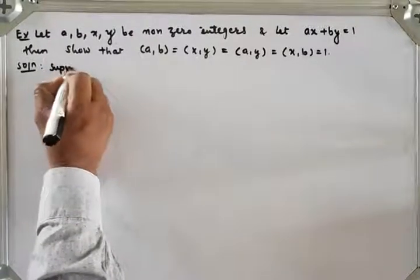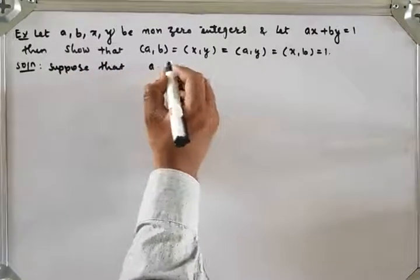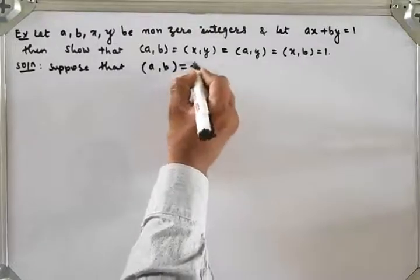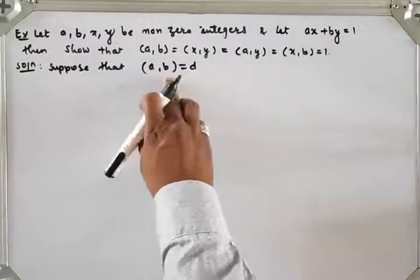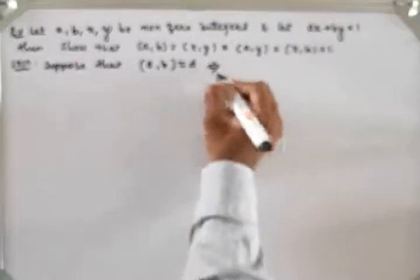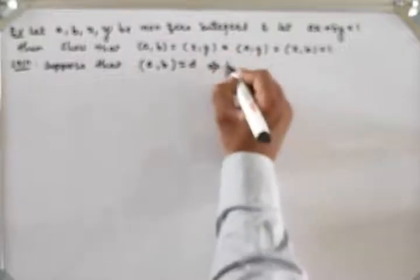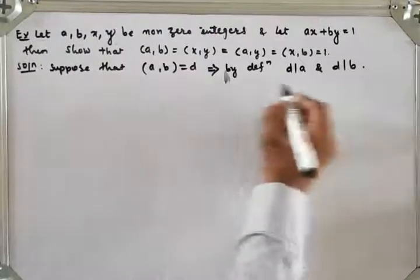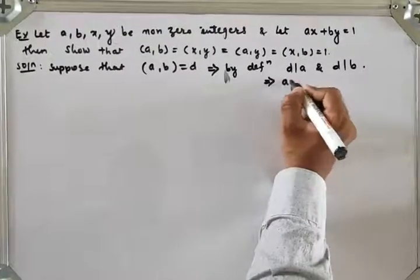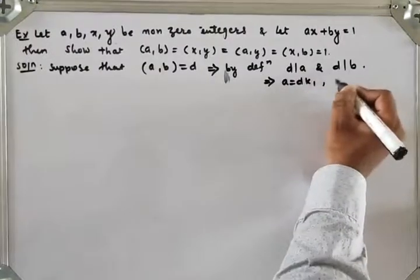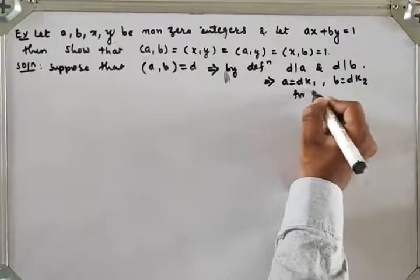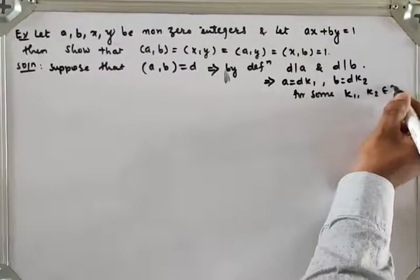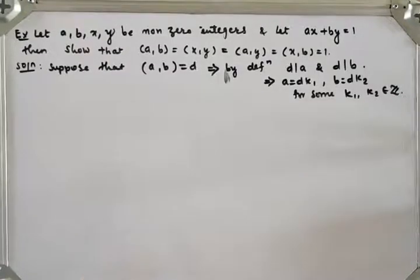Suppose that GCD of A and B is D. If D is GCD of A and B, then D should divide A and D divides B. Then by using definition of divisibility, D divides A and D divides B means there exist integers K1 and K2 such that A equals D times K1 and B equals D times K2, for some K1, K2 belonging to set of integers. We have given AX plus BY is equal to 1.